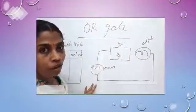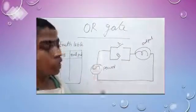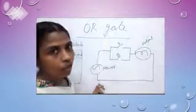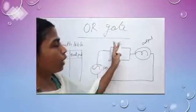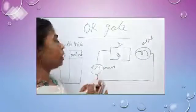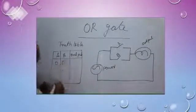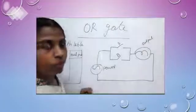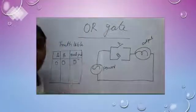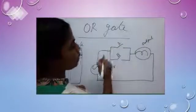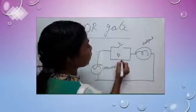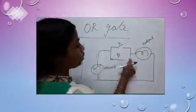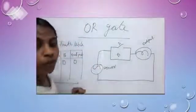This is the circuit diagram of OR gate. This is power, this is output, and A and B are the switches. First, suppose both switch A and B are OFF — the value of A and B is 0. In this case, is there any closed circuit? No! So the output is 0. In this case, it is a closed circuit, so the output is 1.